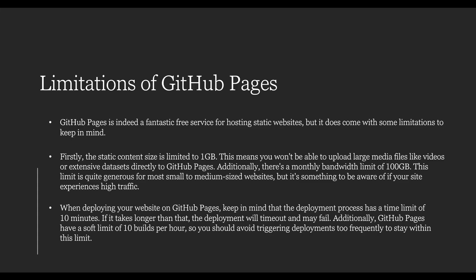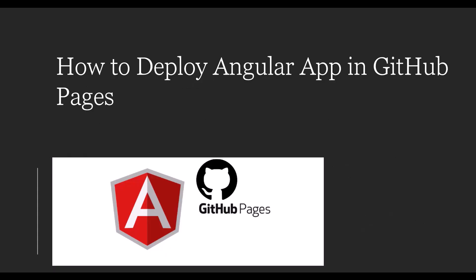Keep in mind that the deployment time limit is 10 minutes — if it takes longer the deployment will time out and fail. GitHub Pages has a soft limit of 10 builds per hour to avoid excessive deployments. It is important to note that GitHub Pages is not recommended for hosting dynamic code or corporate software websites due to its limits and lack of server-side processing. It is designed for developers who want to publish open source web applications, documentation, games, landing sites, and blogs. That's it for the video, thanks for watching.